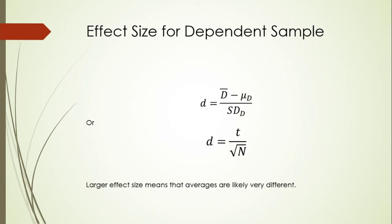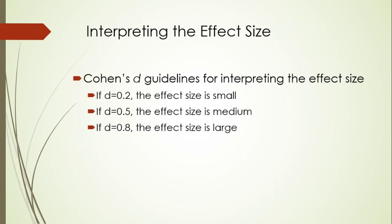Alternatively, one can calculate d = t/√N. One thing we have to remember is that larger effect size means that averages are likely very different.